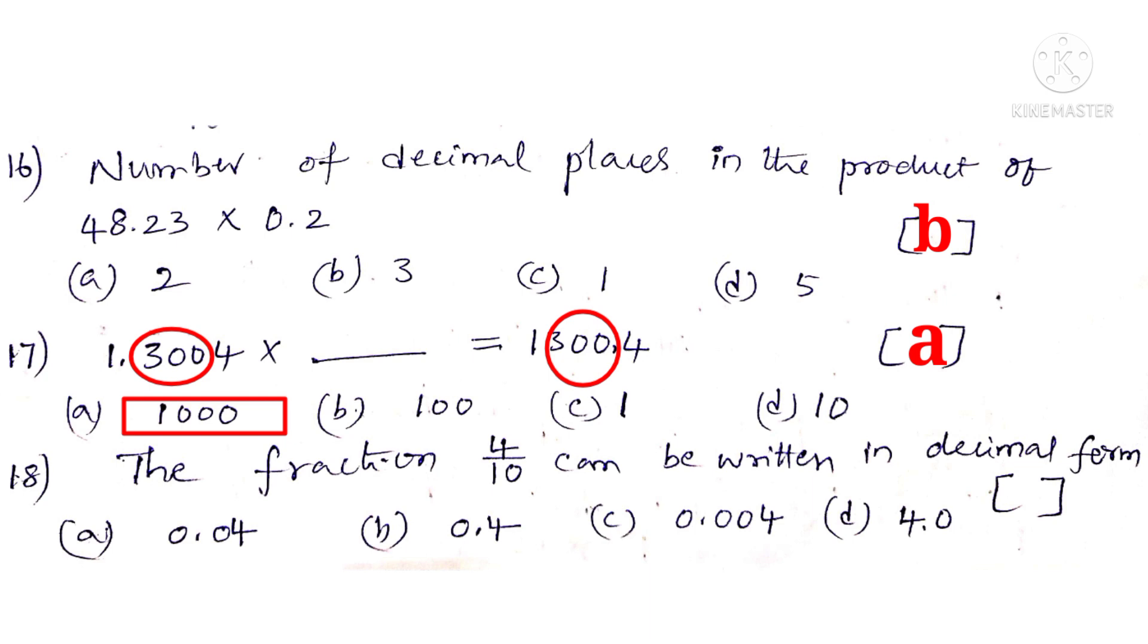Now 18. The fraction of 4 by 10 can be written in decimal form. Observe that there is only 1 zero after 1 in the denominator. So we have to put a decimal point on the left side of 4. That is 0.4. So the correct choice is B.